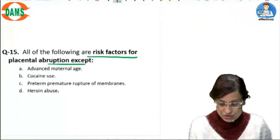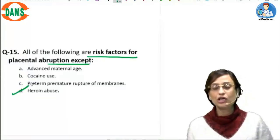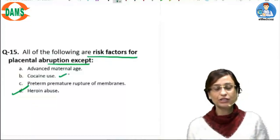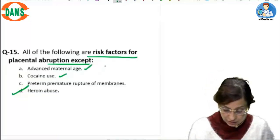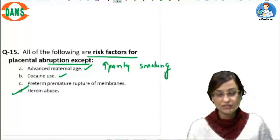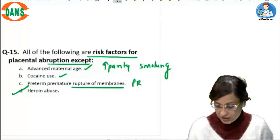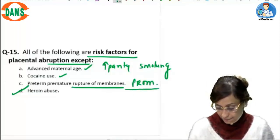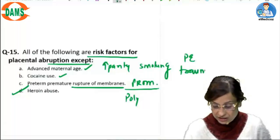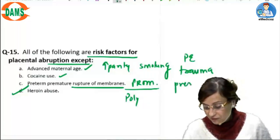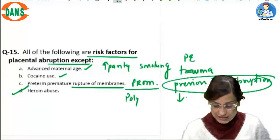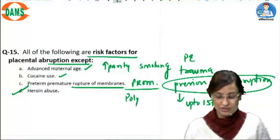Risk factors for placental abruption include cocaine abuse — not heroin — advanced maternal age, increasing parity, cigarette smoking, PROM, polyhydramnios, pre-eclampsia, and trauma. Previous history of abruption is the single most important risk factor because it carries a recurrence risk of up to 15%.